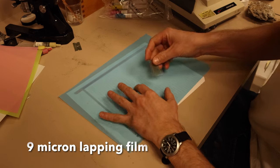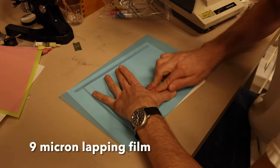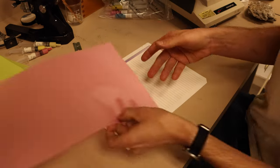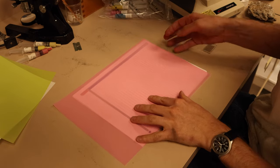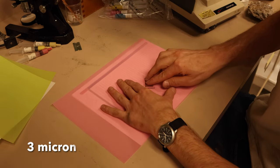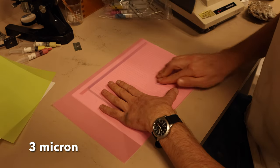Here I'm using the lapping film first, which will give a nice flat polish. Make sure there's paper backing it. When going down in grit, you want your side-to-side motion to be 90 degrees to the previous grit that you used. So now I'm moving up and down on the 3 micron.